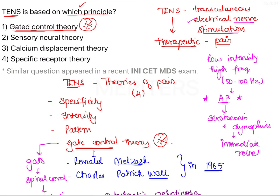Immediate pain relief is achieved with TENS. One important point is that Naloxone cannot reverse the effect of TENS, but local anesthesia can reverse the effect of TENS. Naloxone acts on the endogenous opiate system, but TENS is based on the Gate Control Theory by stimulating cutaneous sensory nerves — mostly A-beta fibers — and therefore it is not dependent on endogenous opioids to achieve pain relief. Therefore, Naloxone is not effective against TENS.